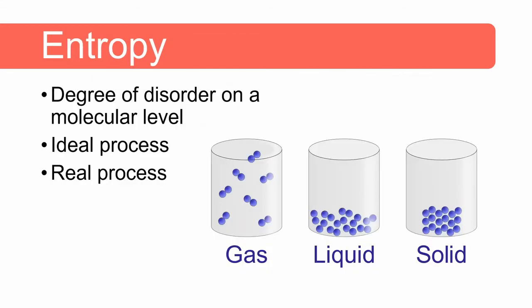Entropy is essentially the degree of disorder on a molecular level. The entropy of a perfect crystal — a solid at zero Kelvin — is zero. As we add heat to the system, the order starts to diminish and entropy increases. In an ideal process, the entropy of the system, including the heat source, remains constant. But in a real process, the total entropy increases — in effect, we are generating entropy.